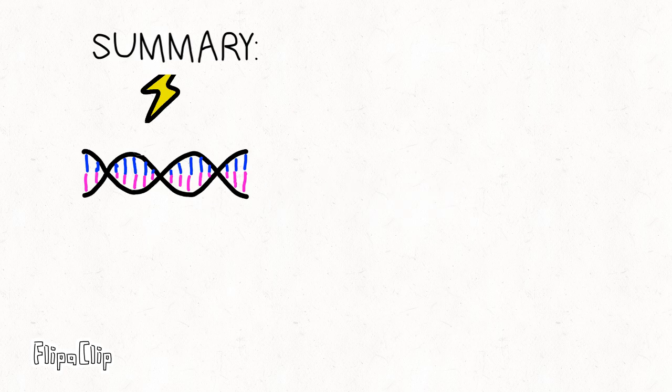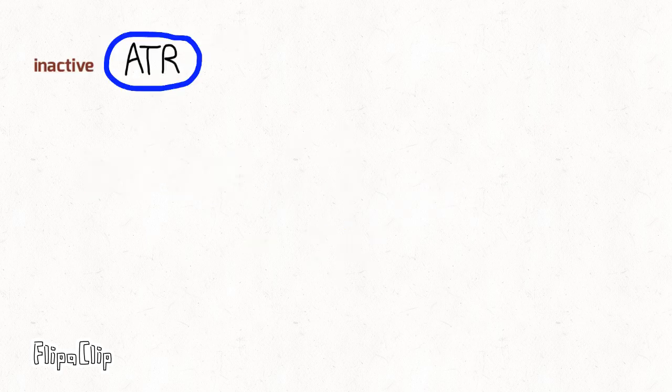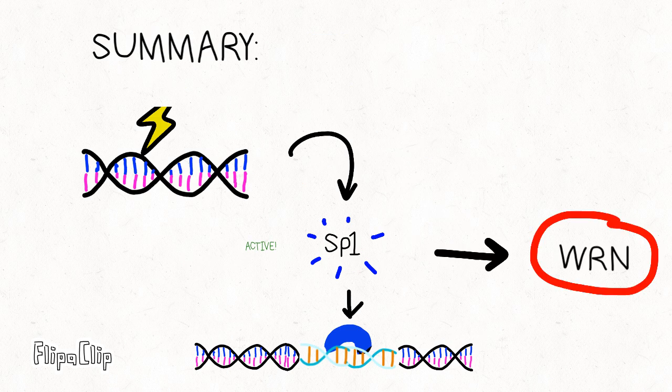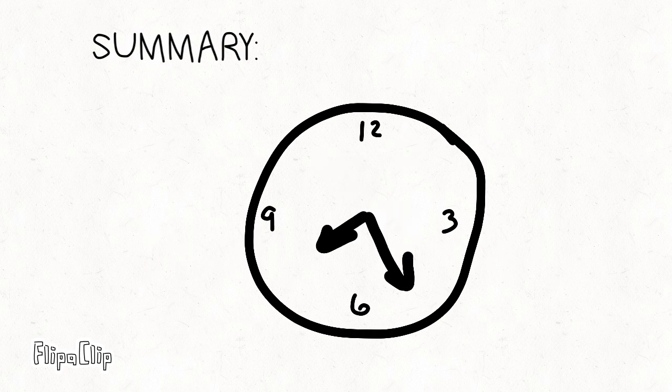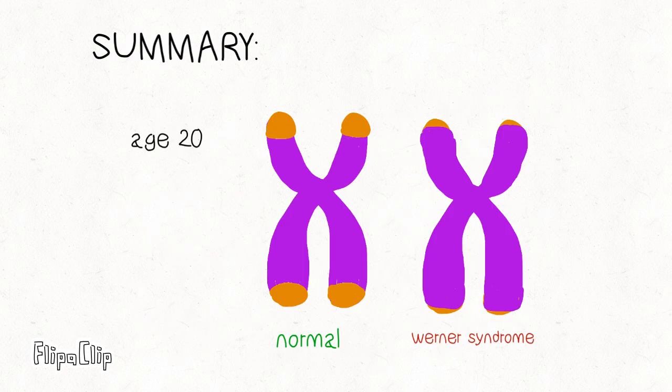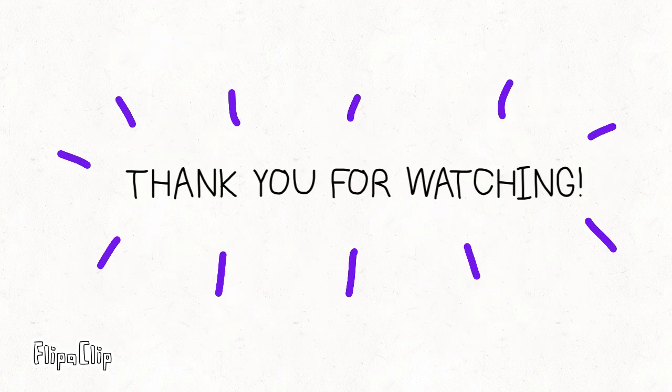In summary, when DNA damage occurs in Werner syndrome patients, SP1 is activated as a cellular response of a signal transduction pathway, which codes for a mutated Werner gene. This creates mutated Werner proteins that can't detect DNA damage and fix it. Over time, DNA damage accumulates and telomeres become unnaturally shortened, causing many symptoms. Thank you for watching.